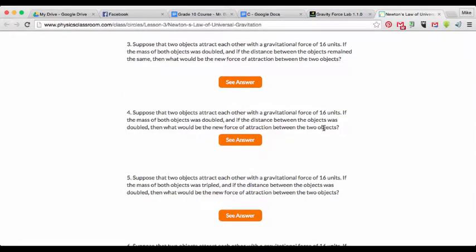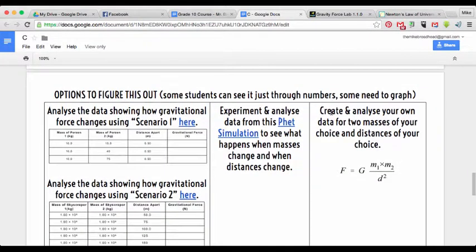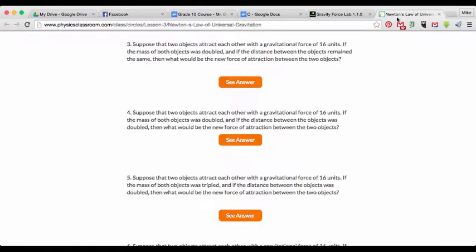Now let's suppose that two objects attract each other with a gravitational force of 16 units. If the mass of both objects was doubled, and if the distance between the objects remained the same, what would the new force be? Well, what we have to think about is, okay, mass 1 doubles, and mass 2 doubles. So together, that would be 4. Now why is that 4? Well, you just think about our formula, mass 1 times mass 2. So if you double this one, and you double this one, and they're multiplied together, it's 2 times 2. You've essentially increased the overall mass by a factor of 4 by doubling both. So in that case, we're going to take 16, and then multiply it by 4.